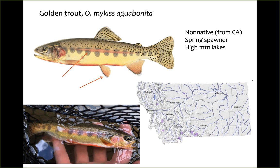Golden trout, Oncorhynchus aguabonita, are non-native — from California — and are mainly found in high mountain lakes. They're also spring spawners and are one of the most colorful of all salmonids. Native to the Sierra Nevada in central California, they were introduced to Montana on both sides of the divide, with many of these lakes historically fishless. They have white borders on paired fins, large spots restricted to a band from the anterior dorsal to the anterior anal fin, and parr marks — dark wide blotches on the sides — that often persist in adults. Golden trout are considered an offshoot of rainbow trout that became isolated in high mountains.